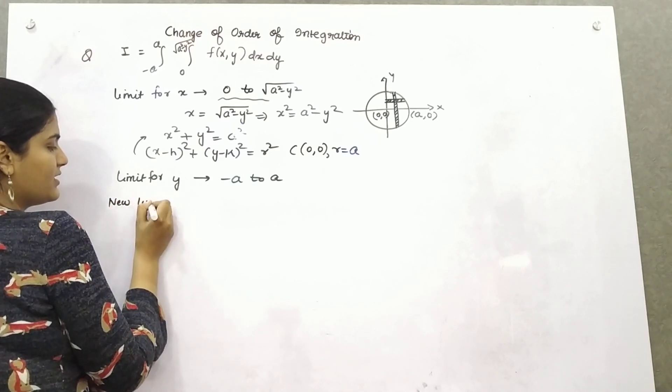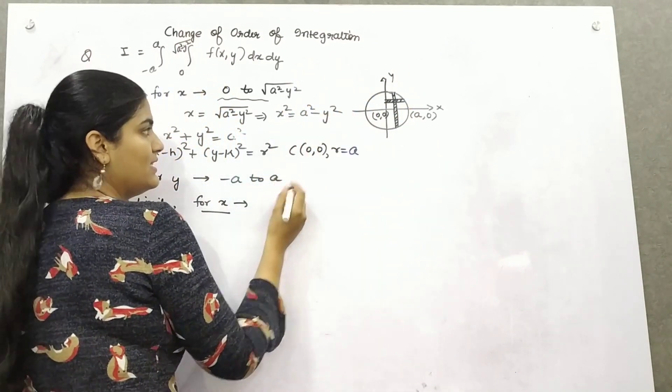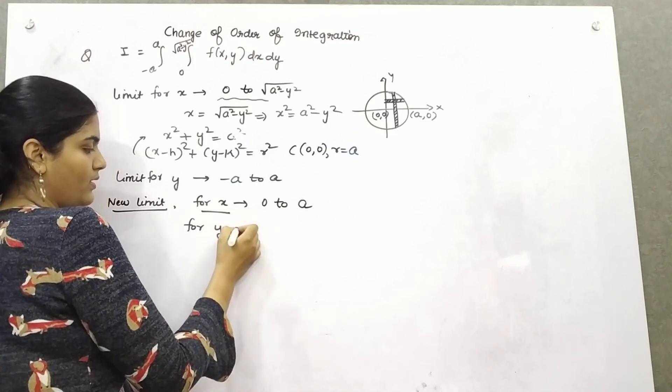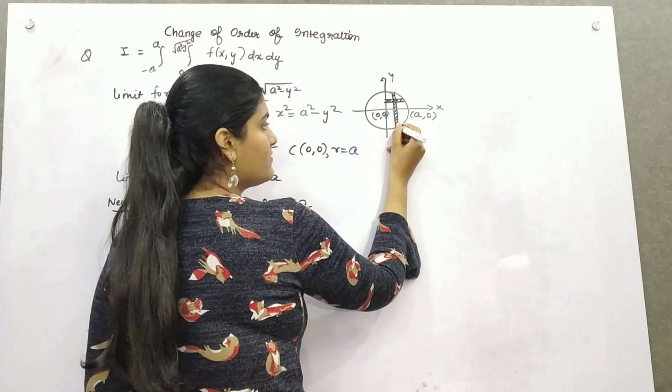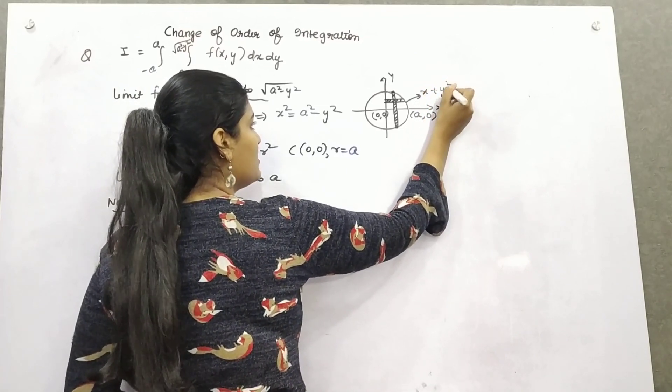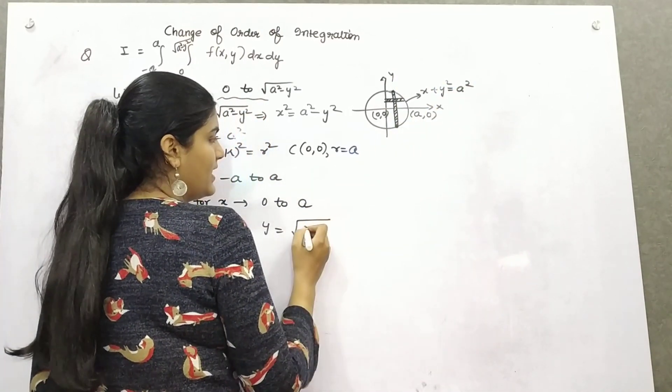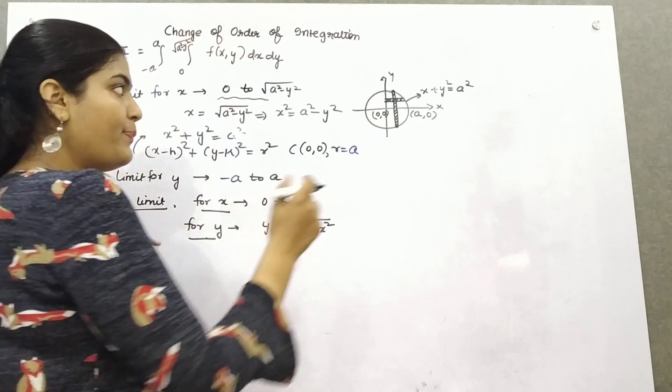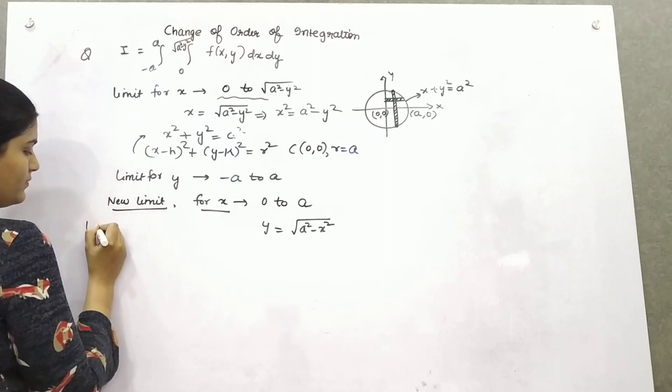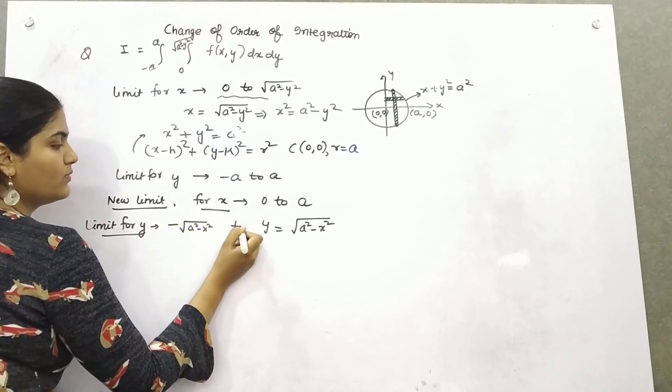Now the new limit after changing the strip for x: we can see that x is leaving from 0 to a. But for y, the limit for y is from here to here. And because this equation is x square plus y square equals a square, y from here will be root a square minus x square. Because it is negative y and this is positive y, the limit for y varies from minus root a square minus x square to plus root a square minus x square.